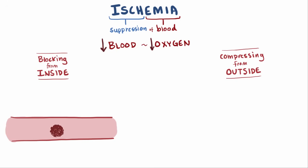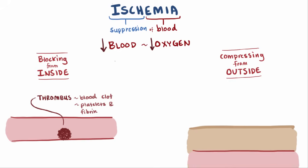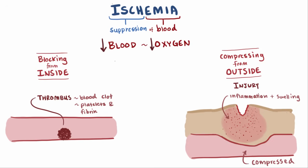An example of something blocking the vessel from inside is a thrombus, also known as a blood clot. These are solid clumps of platelets and fibrin that obstruct blood flow. Ischemia from outside compression includes traumatic injury, which causes inflammation and swelling that applies external pressure, compresses the vessel, and restricts blood flow.